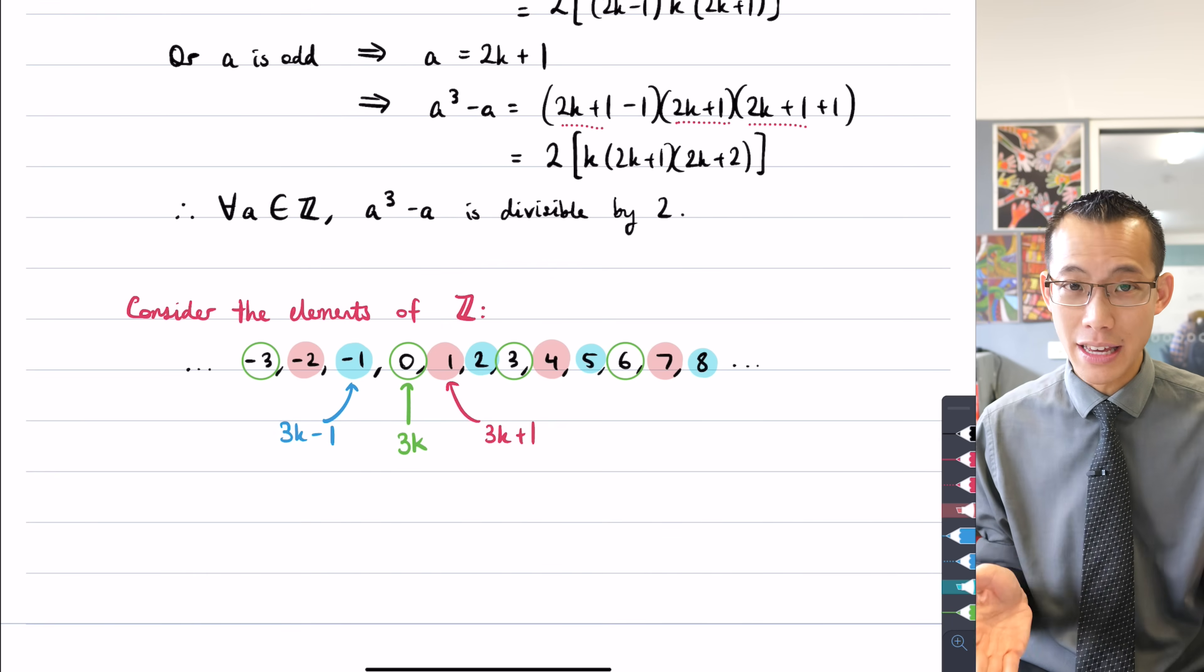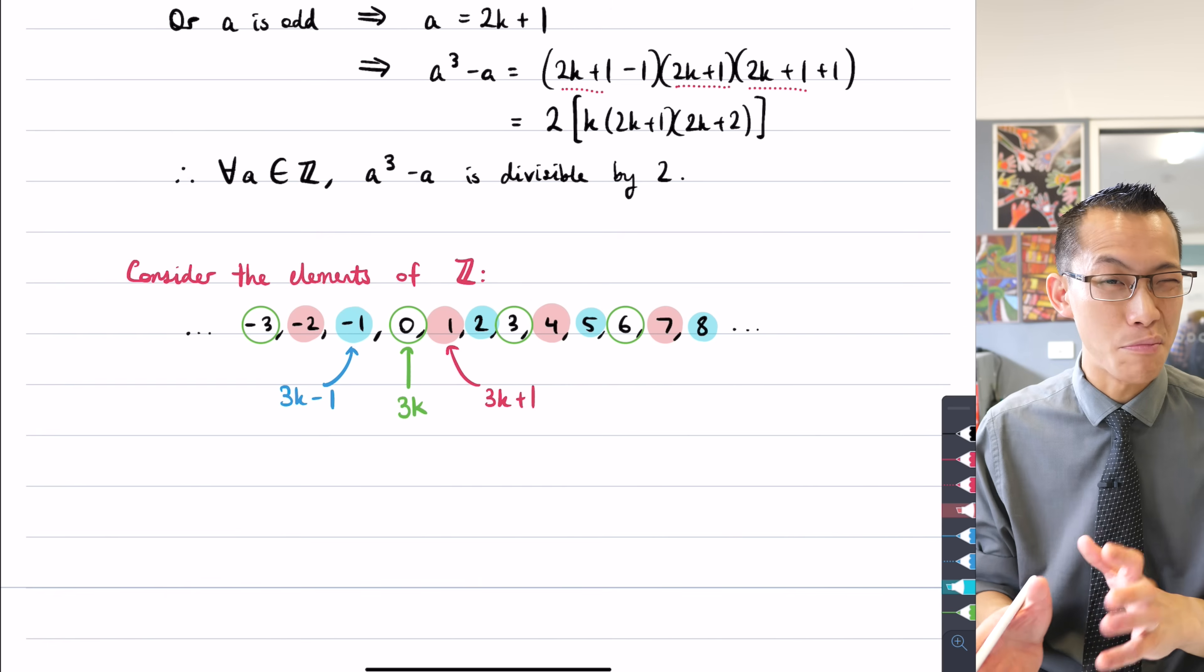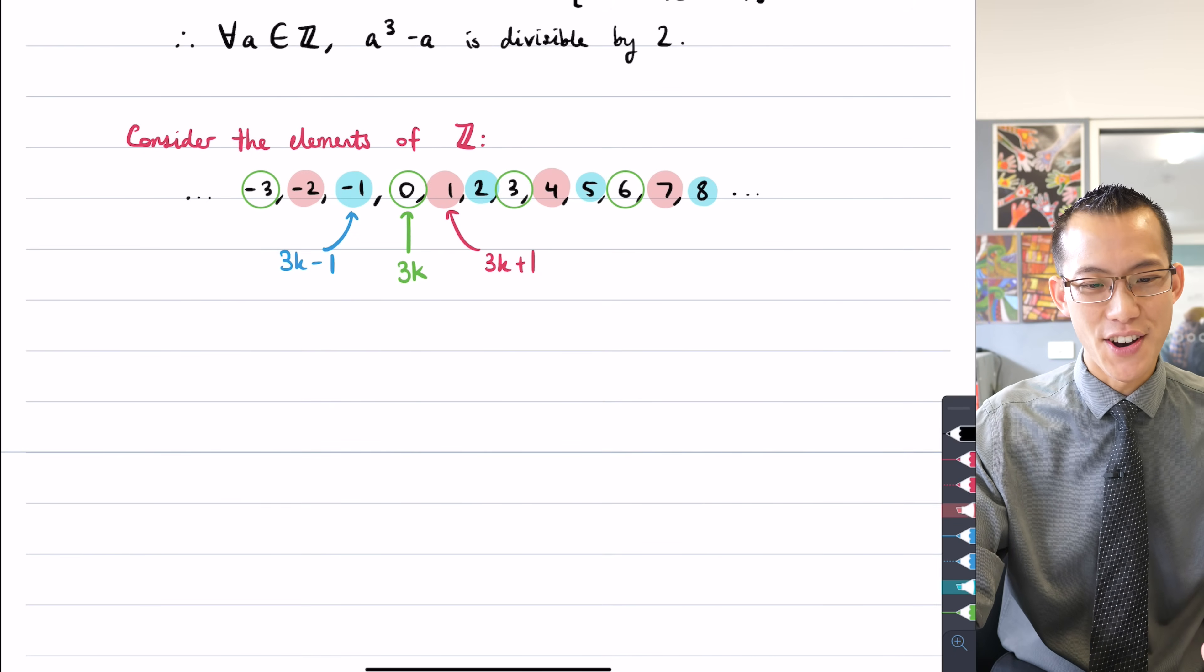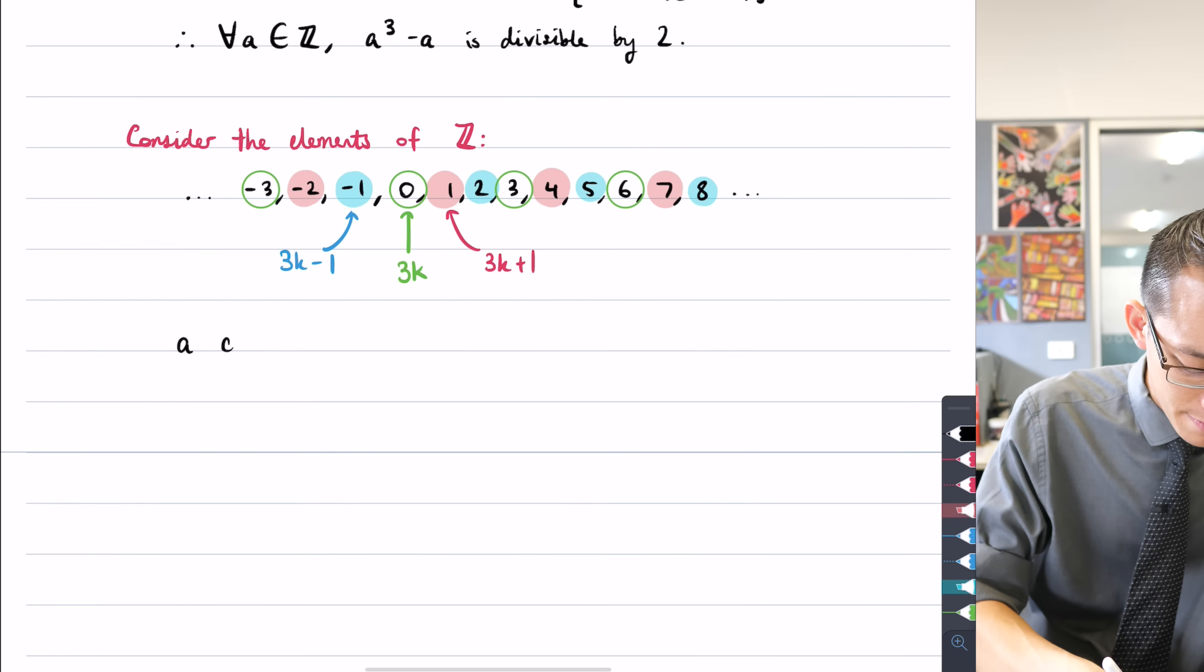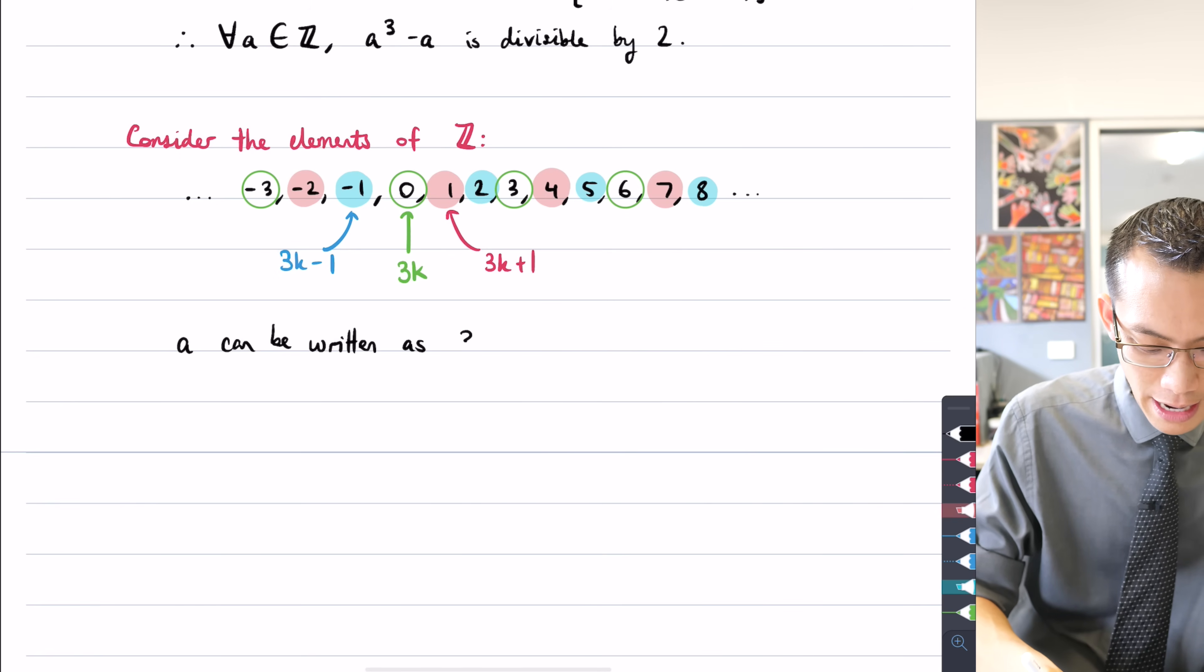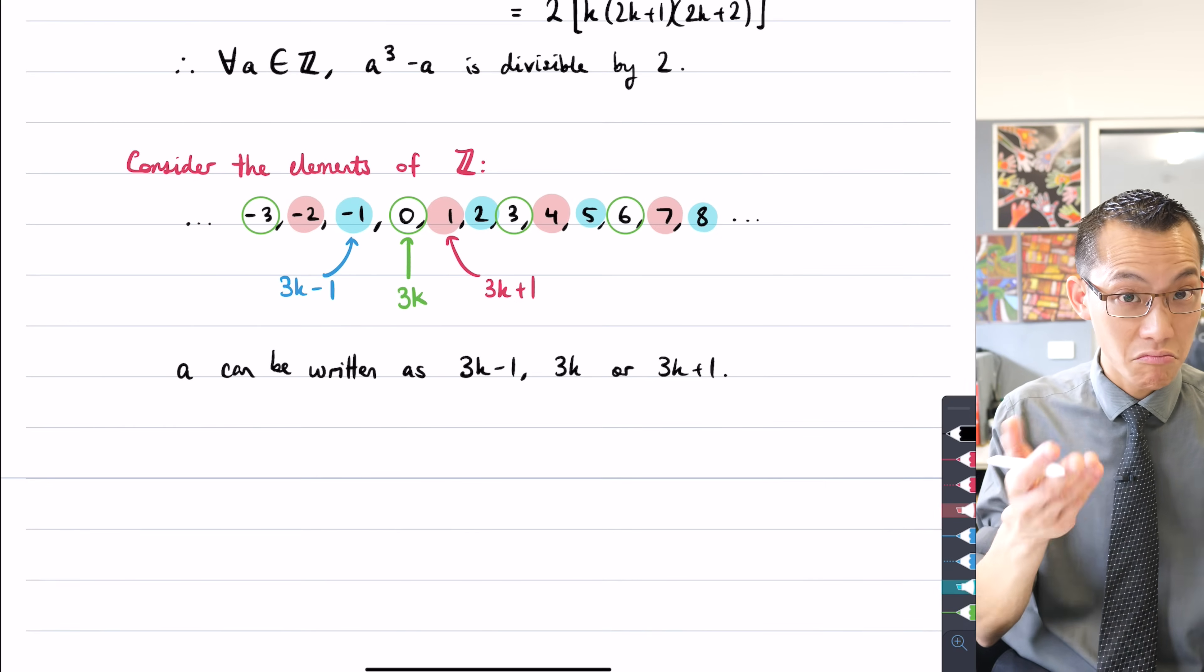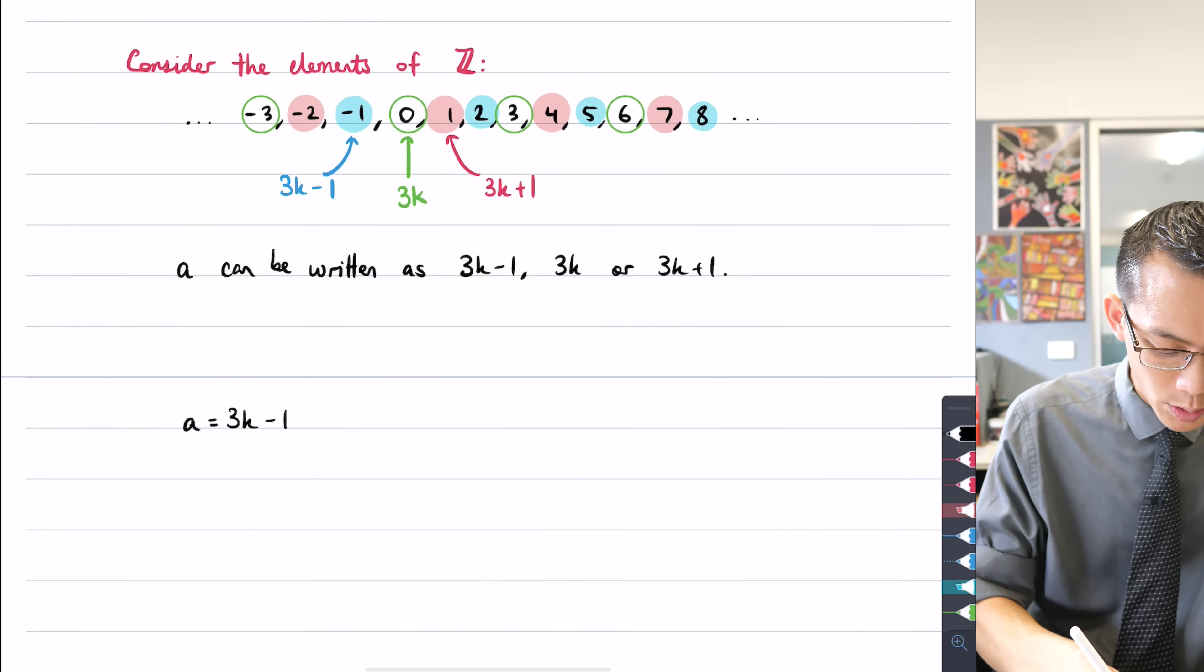A has to be one of these. And if I can prove that you end up with a multiple of three for a³ - a, regardless of which one of these three you start with, then I'll be done. Okay. So how do we go about this? Let's consider each of the cases. So I will say, a can be written, I'm just setting out my cases here. A can be written as 3k - 1, 3k, or 3k + 1. So what I'm going to do is I'm going to say, well, one at a time. If a equals 3k - 1, then what can I say about a³ - a?